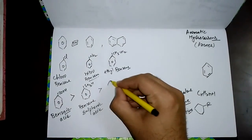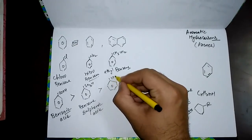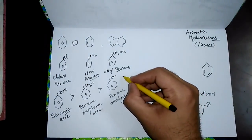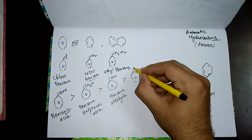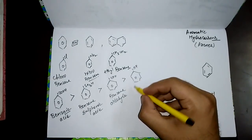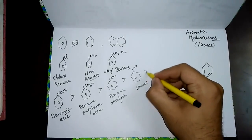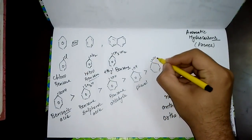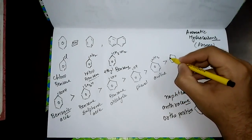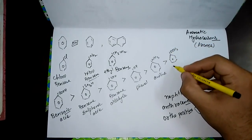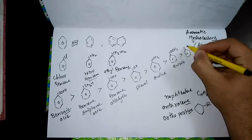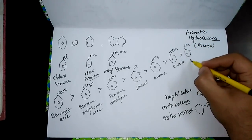Continuing in decreasing priority: next is benzenesulfonic acid, then benzaldehyde when an aldehyde group is attached. After that is phenol — whenever an alcohol group is attached to the benzene ring, it is identified as phenol. When an NH2 amine group is attached to benzene, we call it aniline. Then we have anisole for a methoxy-substituted benzene, and finally toluene when an alkyl group is attached to benzene.